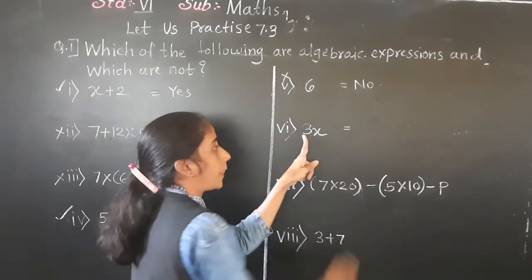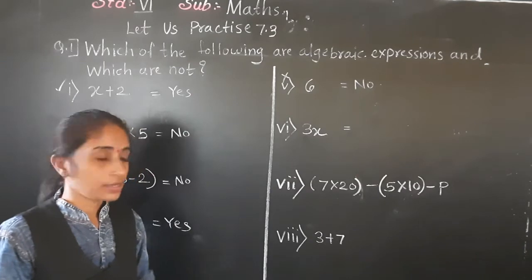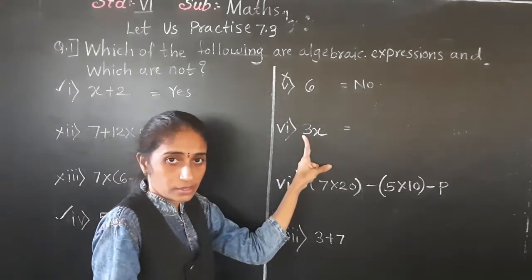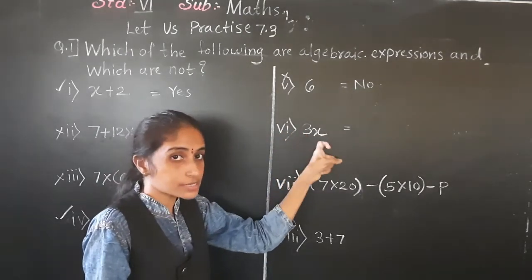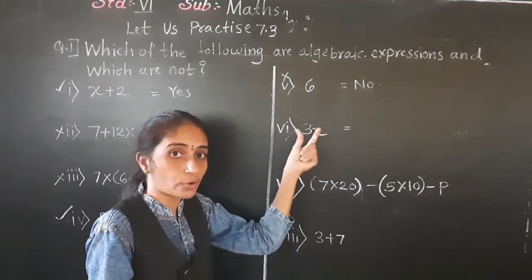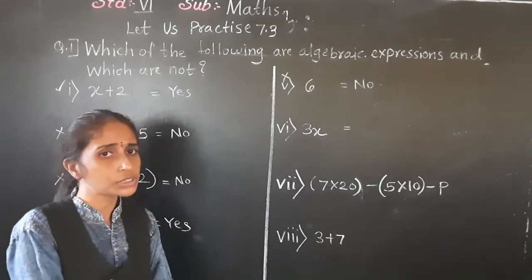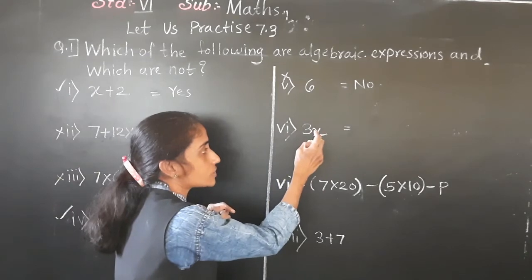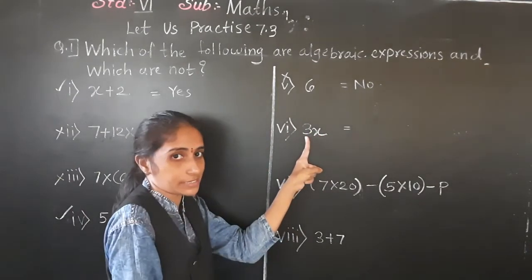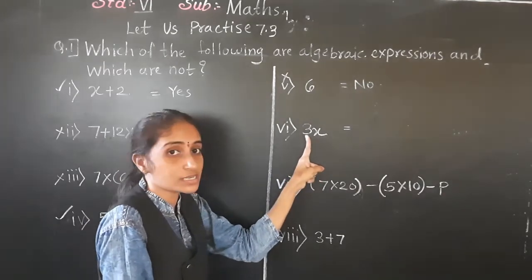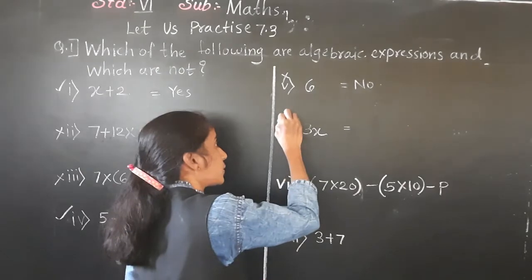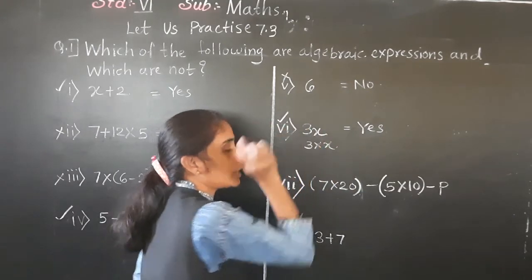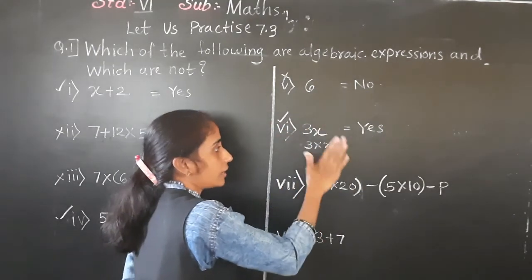Example 6: 3x. Here 3 is a constant (number) and x is a variable (letter). Someone might say there is no operation sign, but when there is no sign between a number and a variable, it means multiplication. So 3x means 3 multiplied by x. This is an algebraic expression — yes.